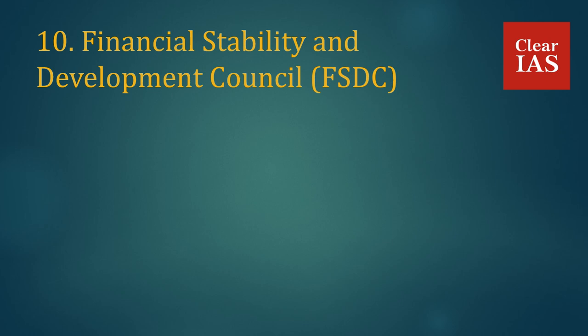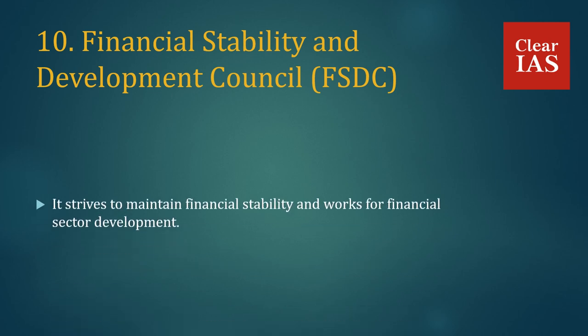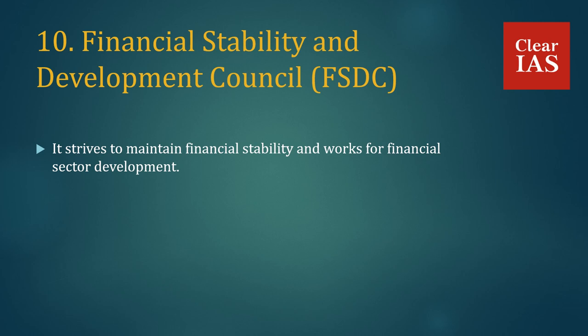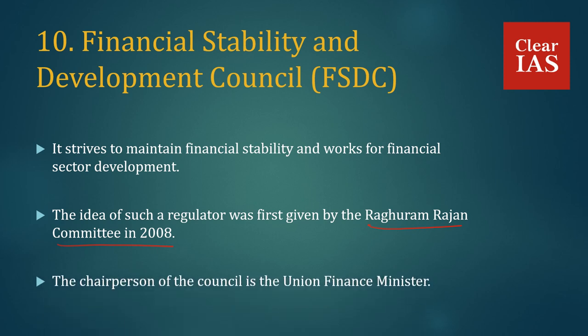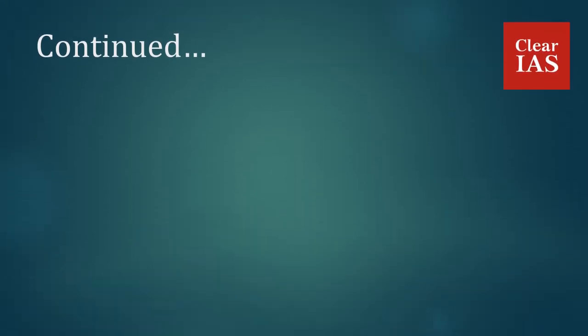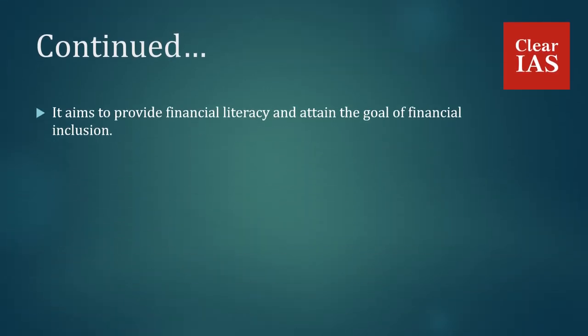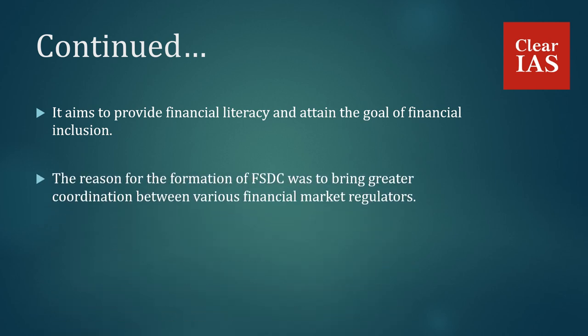Financial Stability and Development Council — FSDC. It strives to maintain financial stability and works for financial sector development. The idea of such a regulator was first given by the Raghuram Rajan Committee in 2008. The Chairperson of the Council is the Union Finance Minister. It aims to provide financial literacy and attain the goal of financial inclusion. The reason for the formation of FSDC was to bring greater coordination between various financial market regulators.